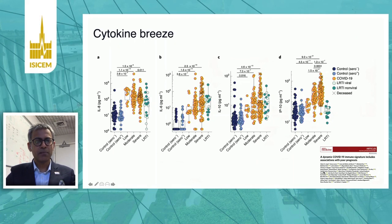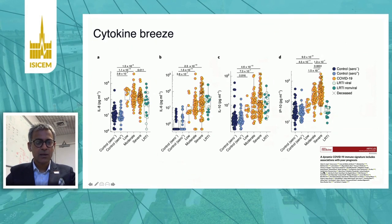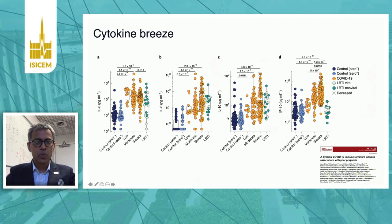There is cytokine production in COVID-19, but it is no different to someone with a lower respiratory tract infection. These graphs show different populations: seropositive controls in blue, low-to-moderate and severe COVID-19 in orange, and lower respiratory tract infection in turquoise. Patients with COVID-19 have IL-8 similar to lower respiratory tract infection. IL-6 shows a dose response with more severe illness. IL-10 is similar, and patients who die seem to have higher IL-6 and higher IL-10.